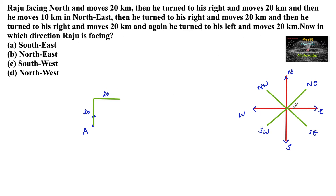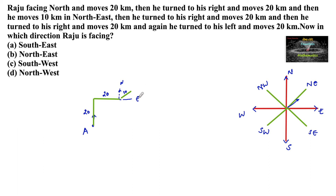Then he moves 10 km in the north-east direction. North-east is between north and east, so he moves 10 km in the north-east direction. Then he turns to his right — when facing north-east, turning right means he is now moving towards the south-east direction.